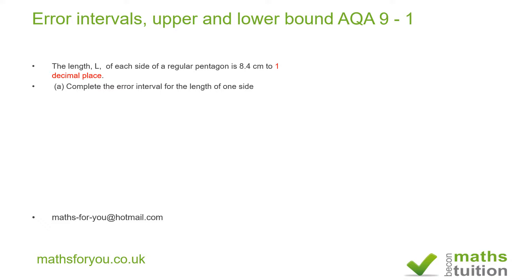So in effect, the difference between the upper bound and the lower bound has got to be 0.1 cm. Now, if that had said to two decimal places, the difference between the upper bound and the lower bound has got to be 0.01. And if it had said to three decimal places, the difference would have been 0.001. Okay, hope that makes sense.